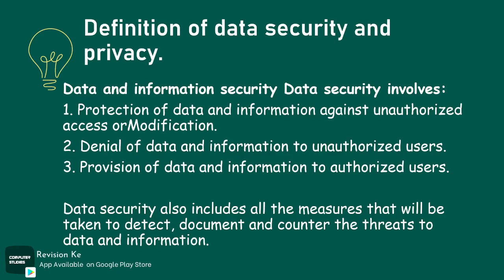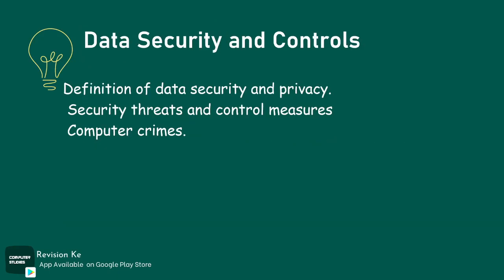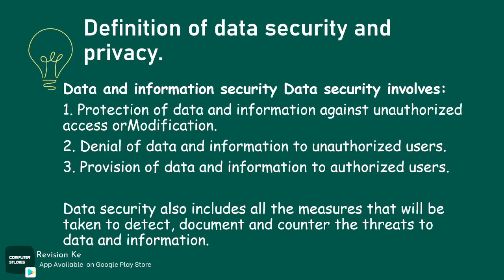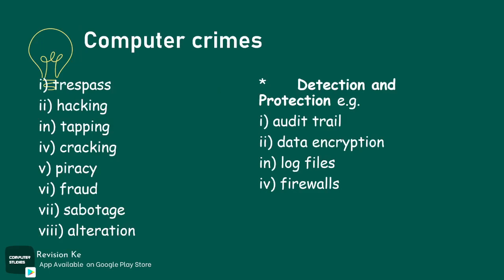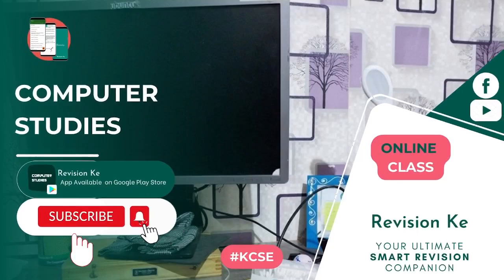Looking at computer crimes, we can list a few: trespass, hacking, tapping, cracking, privacy fraud, sabotage, and alteration. Methods of detecting and protection include audit trail, data encryption, and log files. We will discuss these in detail in our next class, which will be uploaded here on YouTube.